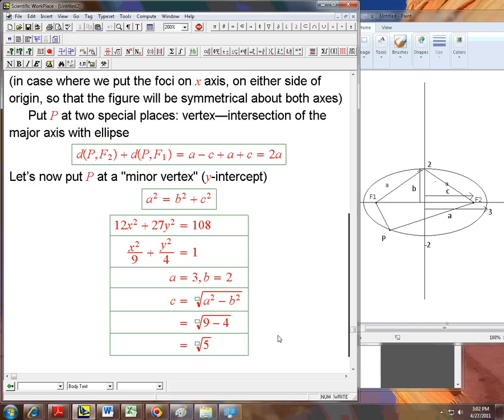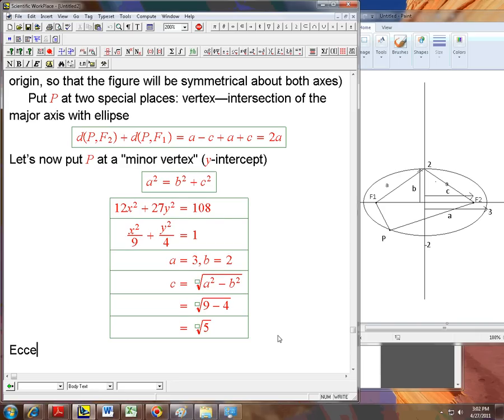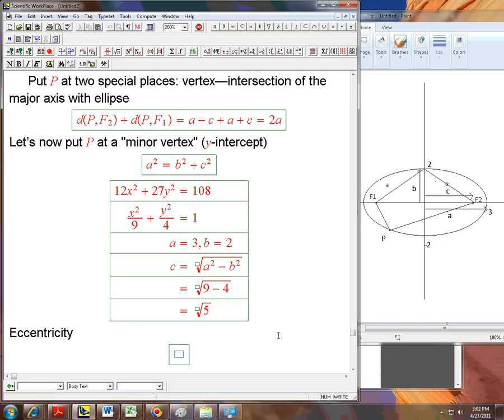Now, one measure of how close to a circle this is or how far away from a circle it is is the eccentricity. By definition, eccentricity little e is just c over a. And that eccentricity, if these two foci come together, you can probably believe that we get closer and closer to a circle. And that's where a and b become to be equal. Because if c is really small, a and b get close to being equal.